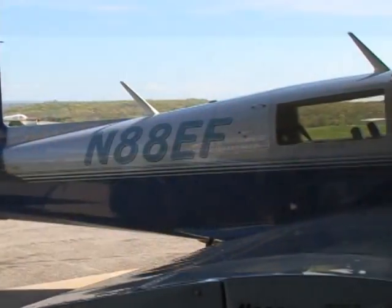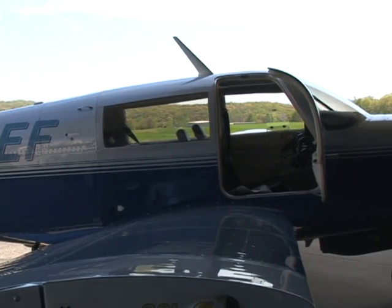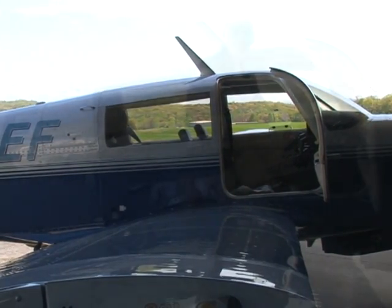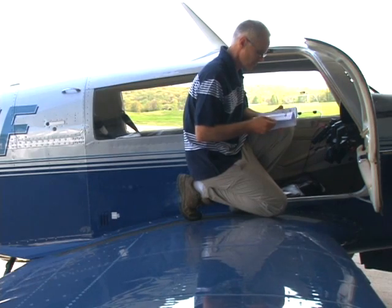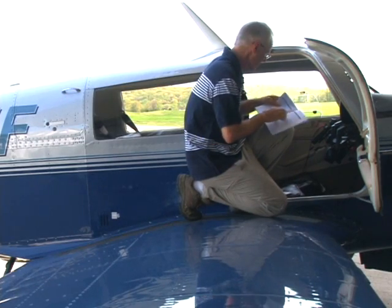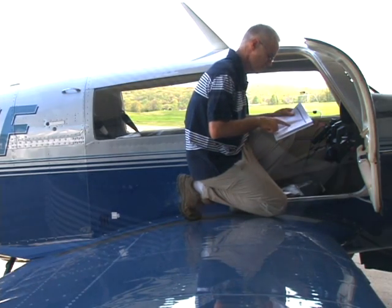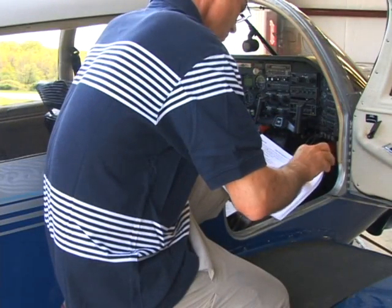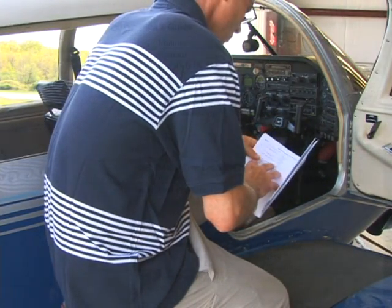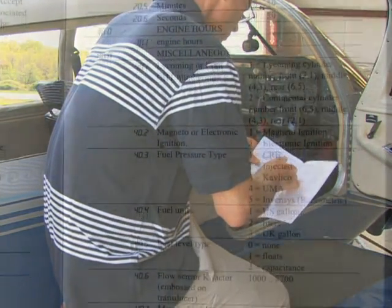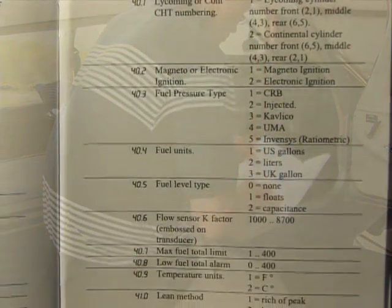It is recommended that you use Vision Config to configure your VM1000C. But instead of using Vision Config, you may use the VM1000C's built-in setup menu. Each setup menu has a numeric code. In the Pilot's Guide, there is a complete list of setup parameter codes and subcodes.